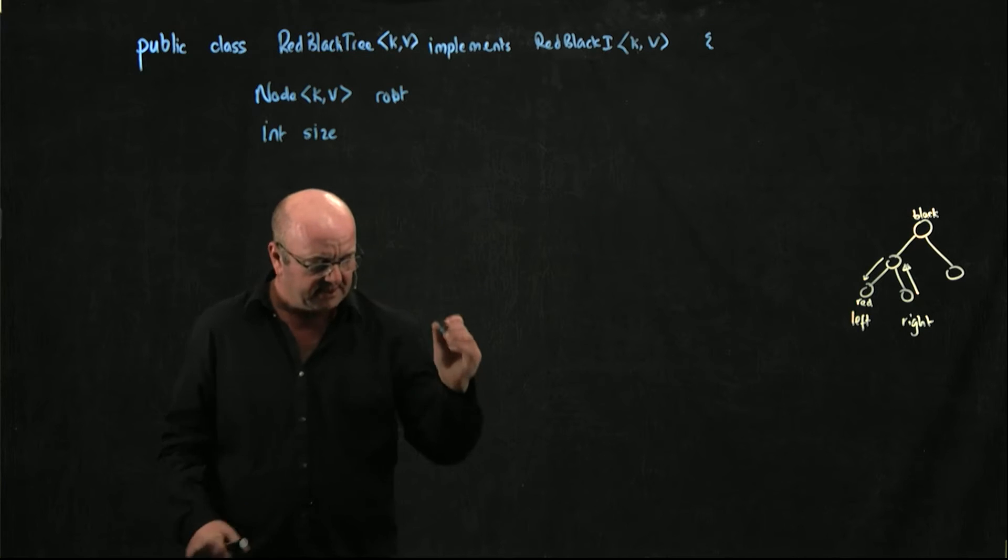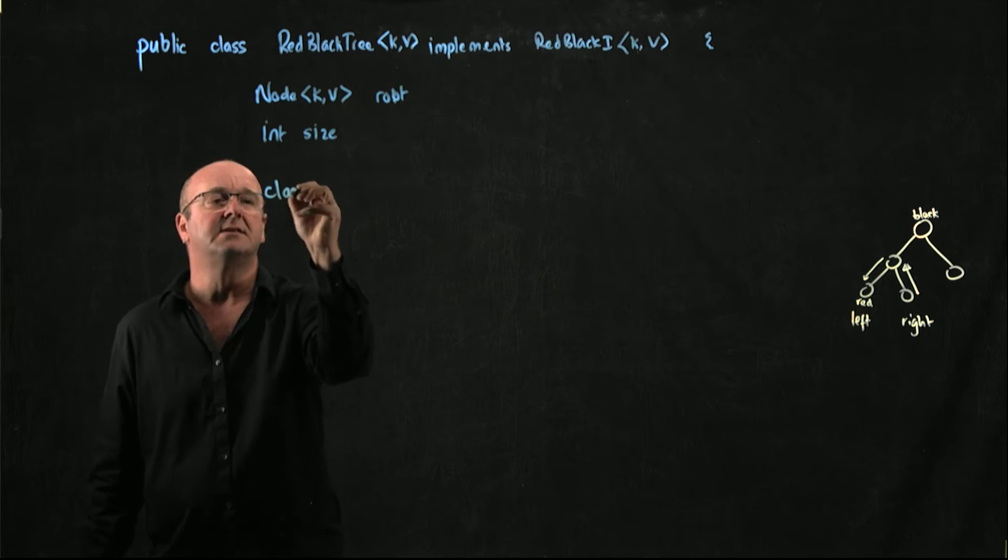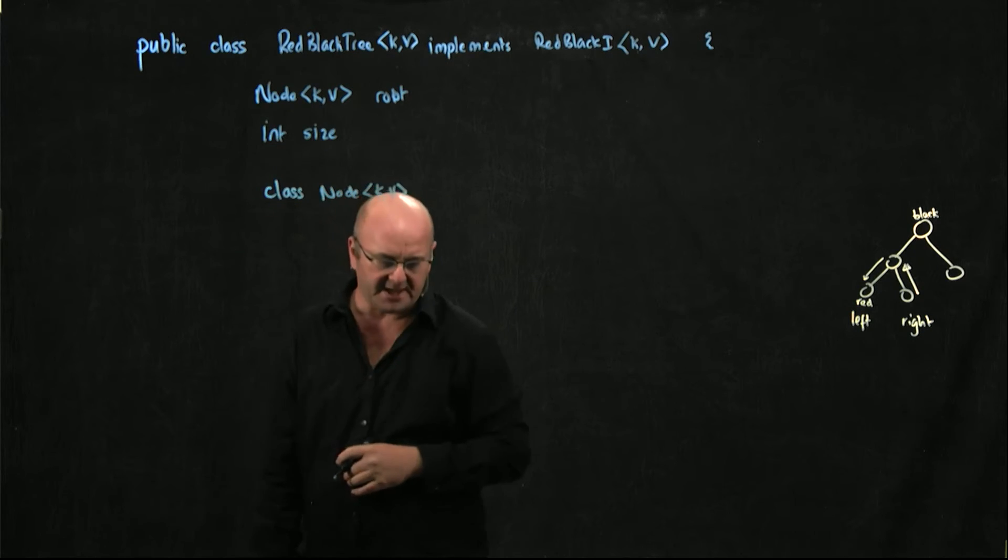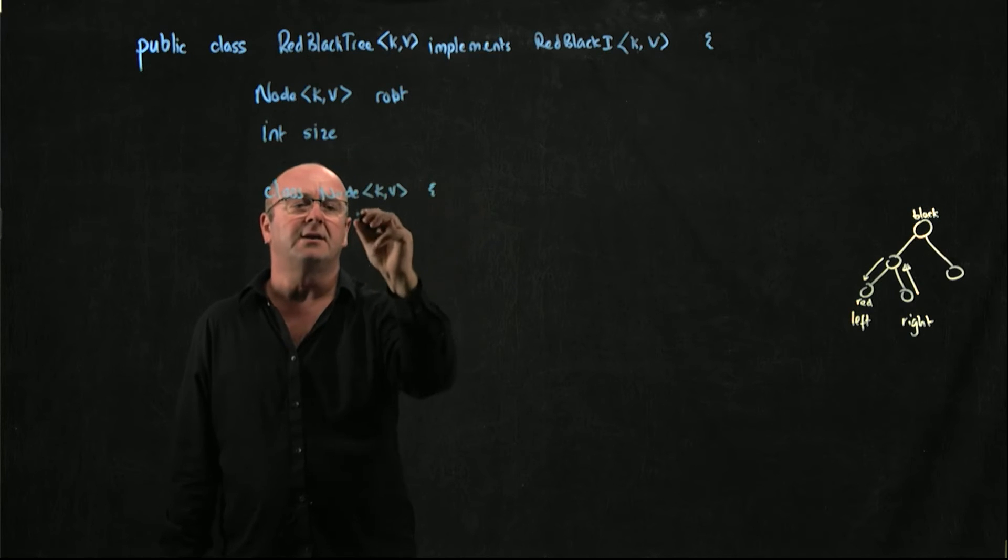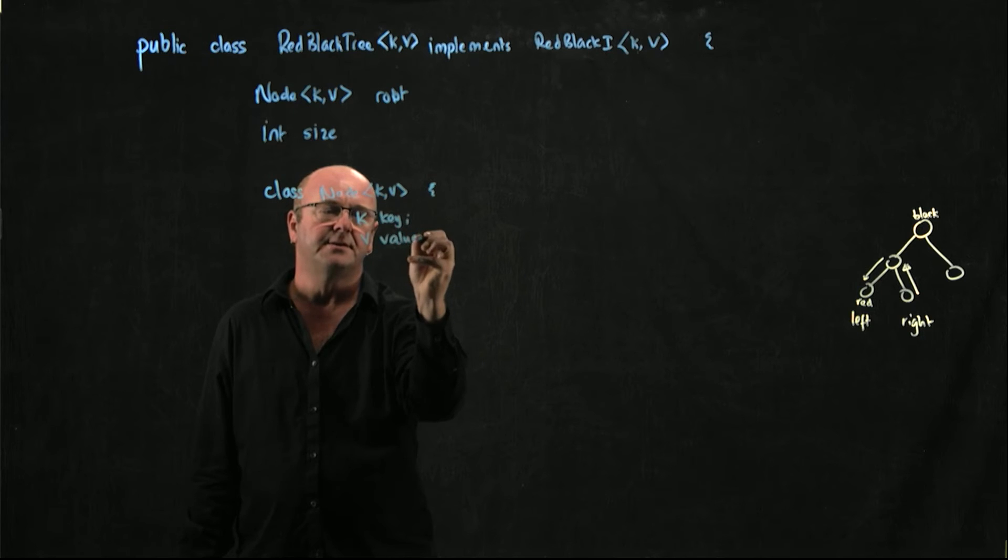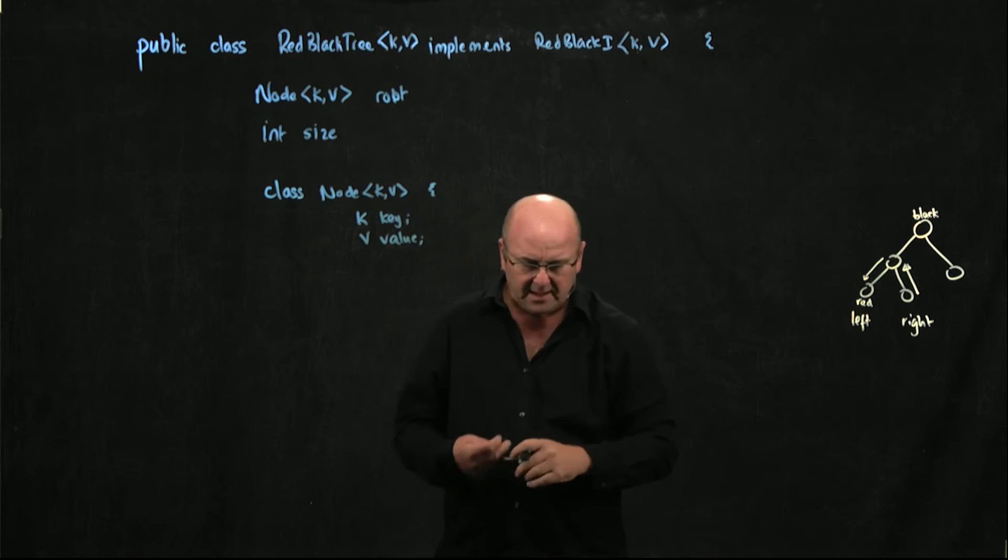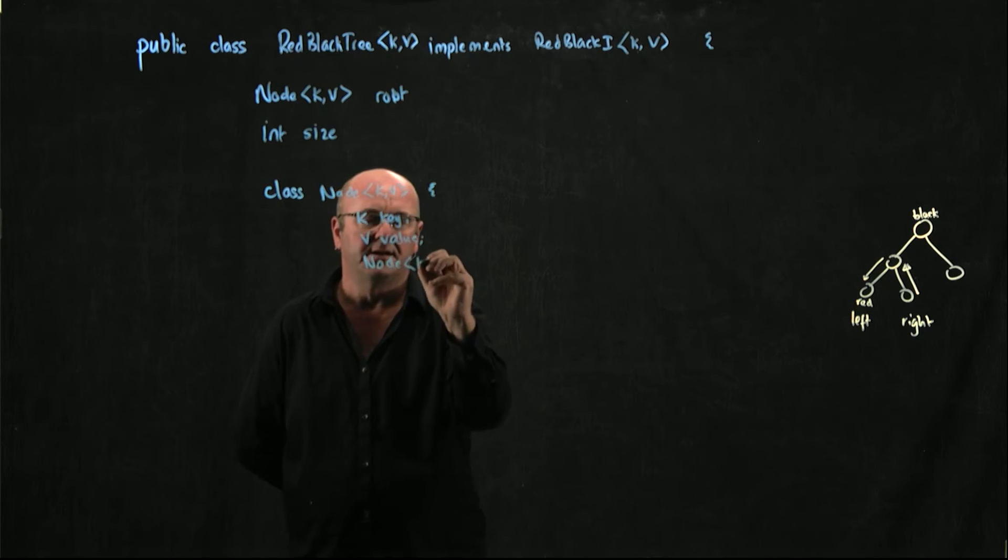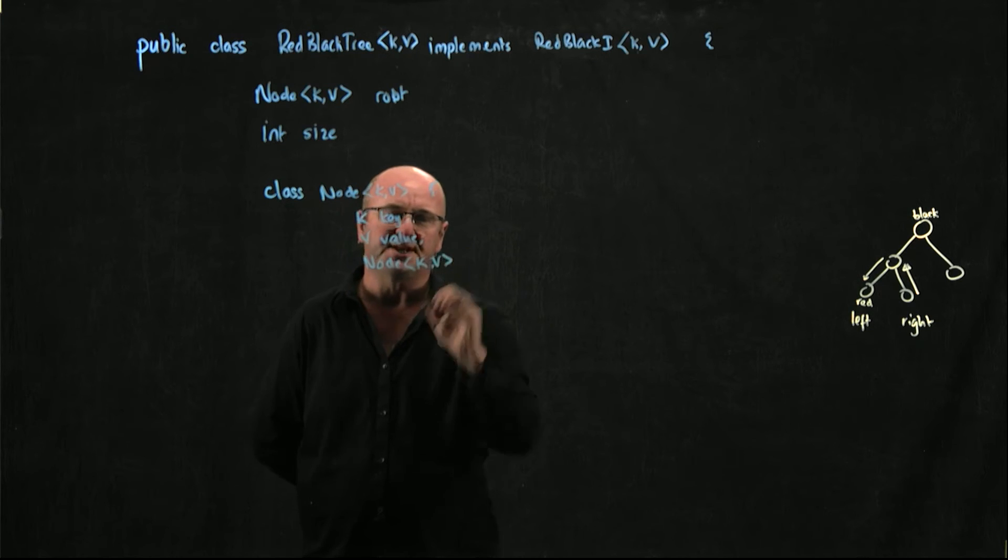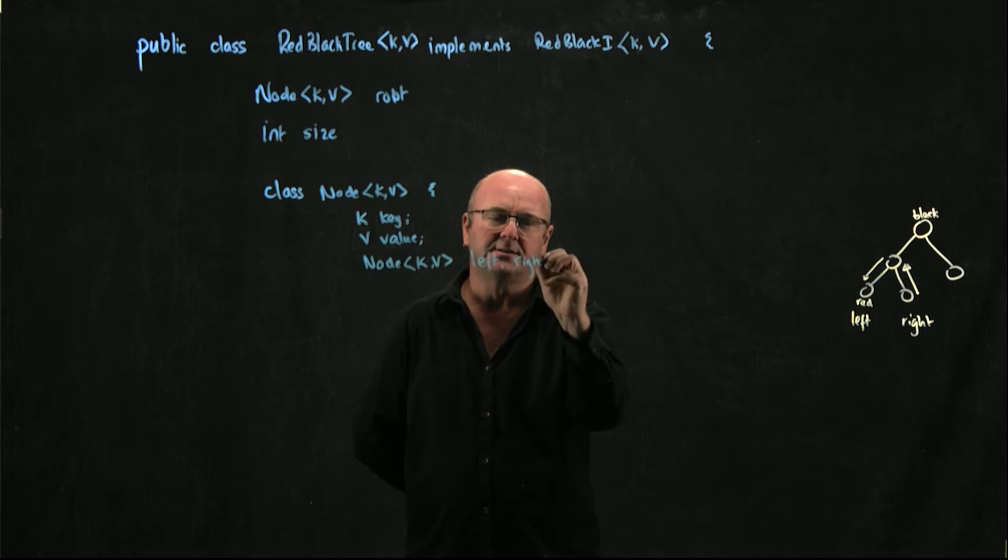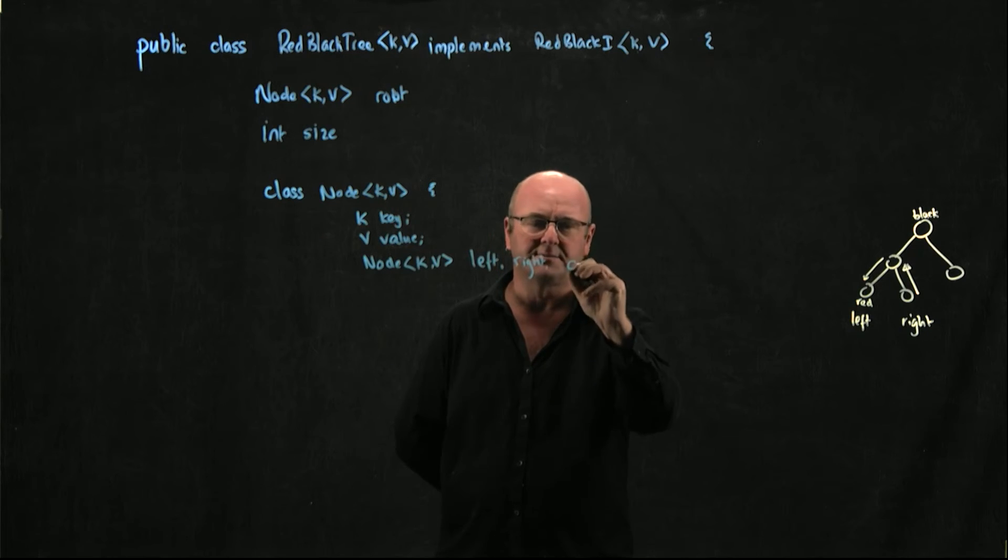Let's have a look at the class. It's going to be a class of node K,V objects. We're going to store the key and the value, the K and the V. Then, as I mentioned, we're going to have node K,V objects, and we're going to have a left child, a right child, and a parent node.